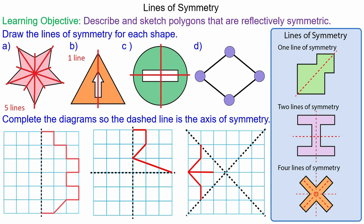And for question d, again there is a horizontal and a vertical line of symmetry which is two lines of symmetry.